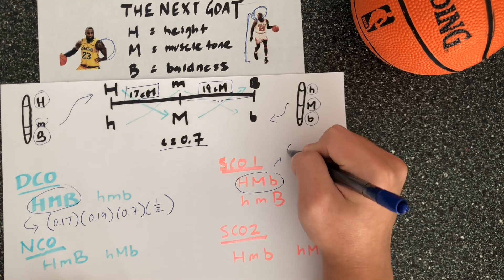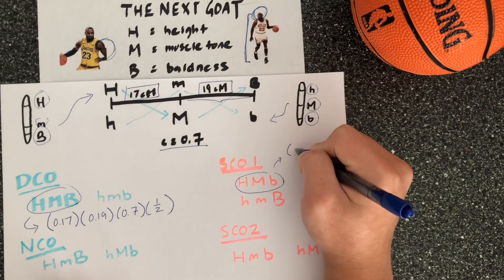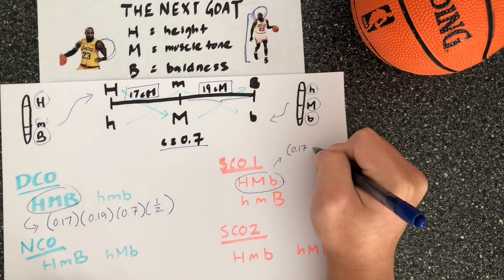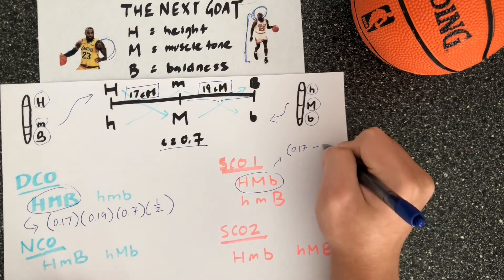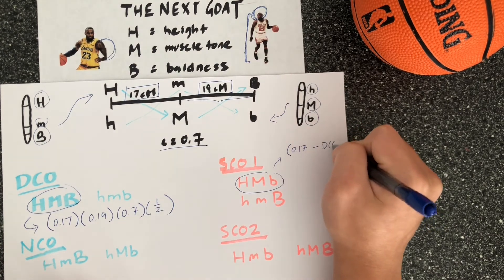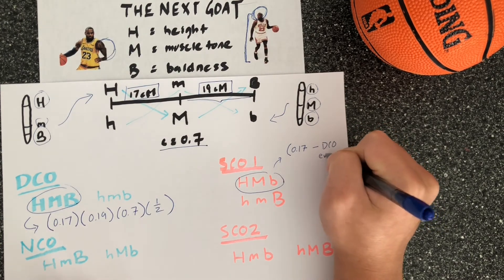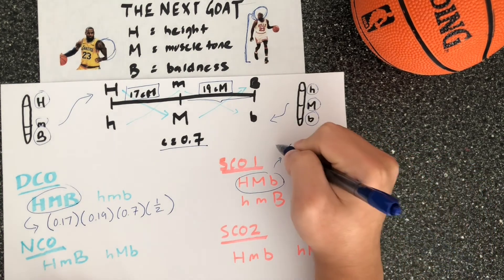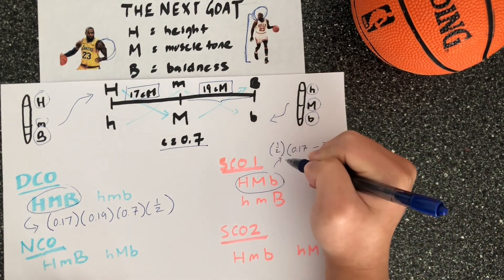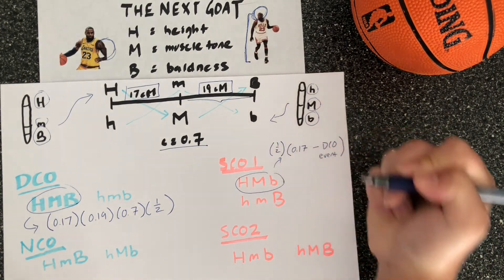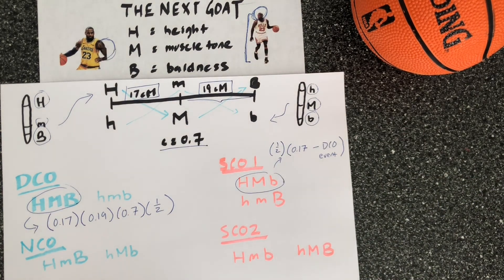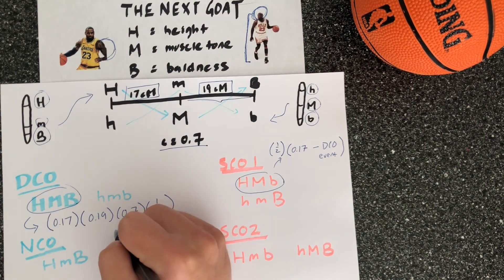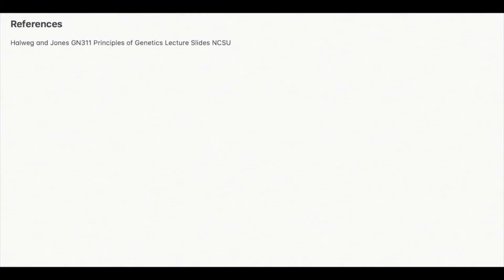To find a single crossover one event, you subtract the double crossover event probability from the first recombinant probability — so 0.17 minus the double crossover event — and again divide by two to find the specific single crossover event probability.